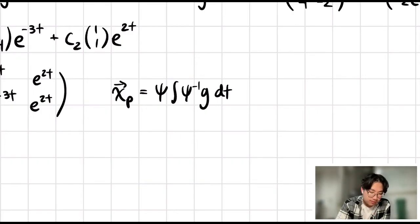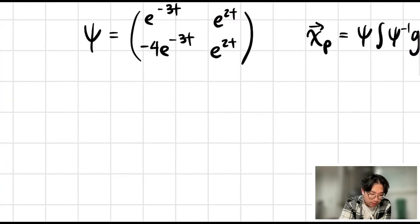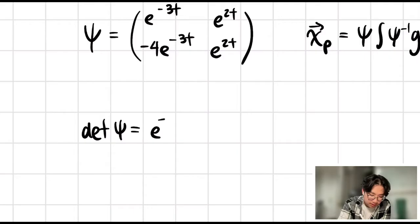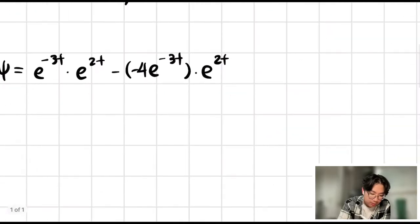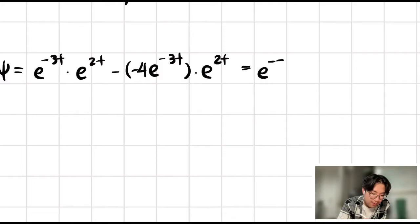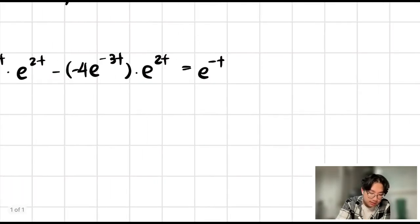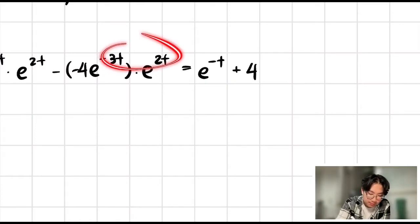First, we want to find the determinant of our psi, which is equal to just the typical 2-by-2 determinant. So we have e to the negative 3t times e to the 2t, minus negative 4e to the negative 3t times e to the 2t. This first part simplifies to e to the negative t. Here we have minus negative 4, so it becomes plus 4 times e to the negative t, which when collected together gives 5e to the negative t.